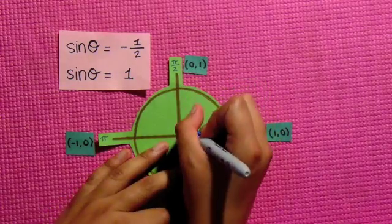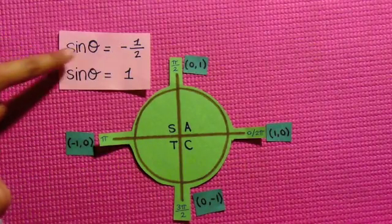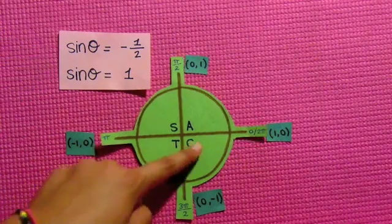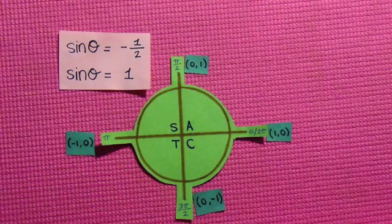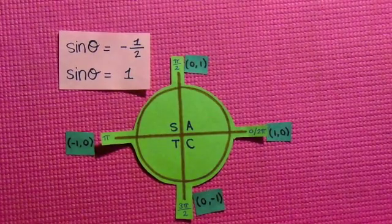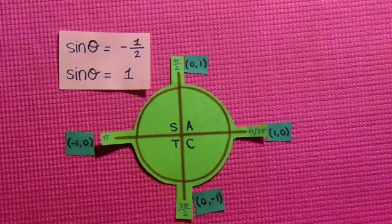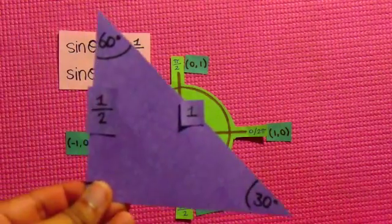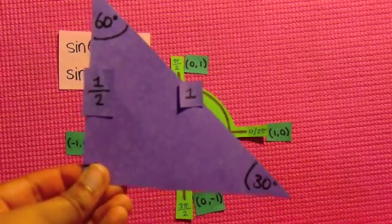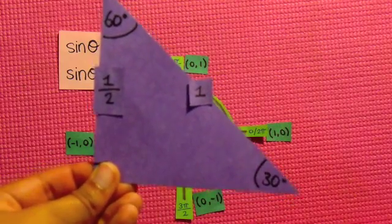We will label the quadrants so that we know when sin is positive and when it is negative. Since the question asked for negative 1/2, we will find the answers when sin is negative in quadrants 3 and 4. This is because in these quadrants tan and cos are positive, leaving sin to be negative. Remember our special triangle and remember that we will use 30 degrees because the opposite over the hypotenuse equals 1/2.